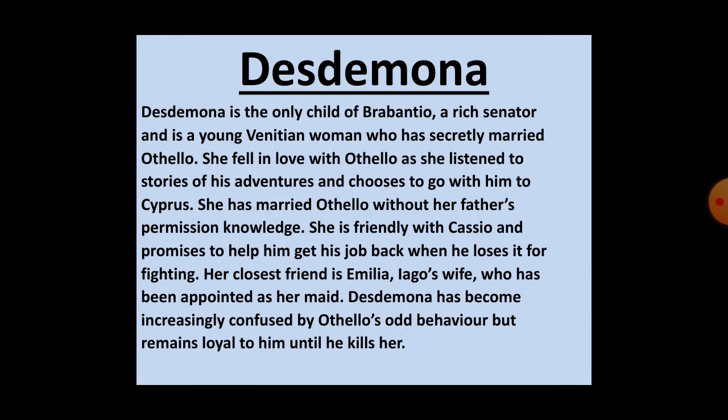Now I move towards our second character, Desdemona. Desdemona is the only child of Brabantio, a rich senator, and is a young Venetian woman who has secretly married Othello. She fell in love with Othello as she listened to stories of his adventures, and chooses to go with him to Cyprus. She married Othello without her father's permission or knowledge.